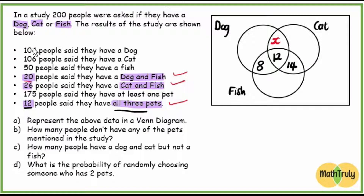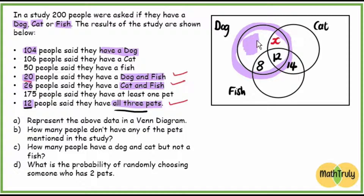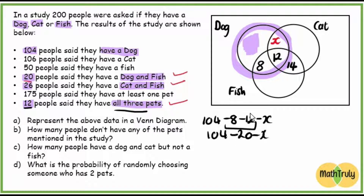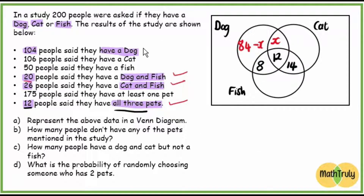Now we move to the full circles. 104 people have a dog — that's the entire dog circle. They don't say dog only, so it includes every number in the dog circle. To find dog only, we take 104 minus 8 minus 12 minus X. That's 104 minus 20 minus X, which gives us 84 minus X for dog only.